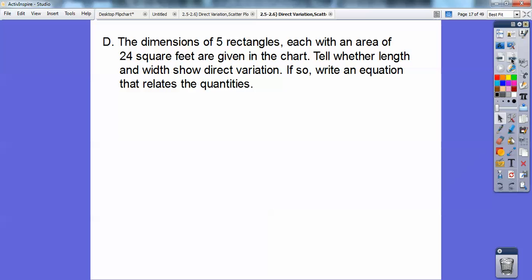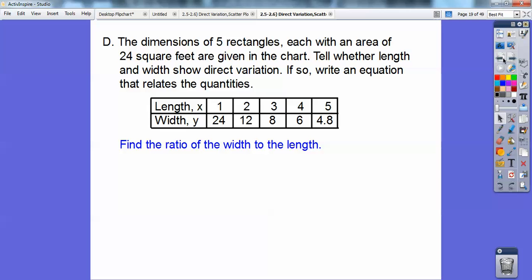So the dimensions of five rectangles each have an area of 24 square feet are given in the chart. So tell whether the chart, tell whether the length and the width show a direct variation. If so, write an equation. So let's go ahead and find the ratios of each width. Can you see 24 times 1 is 24, 12 times 2, 8 times 3, 6 times 4, all of these equal 24 right there.